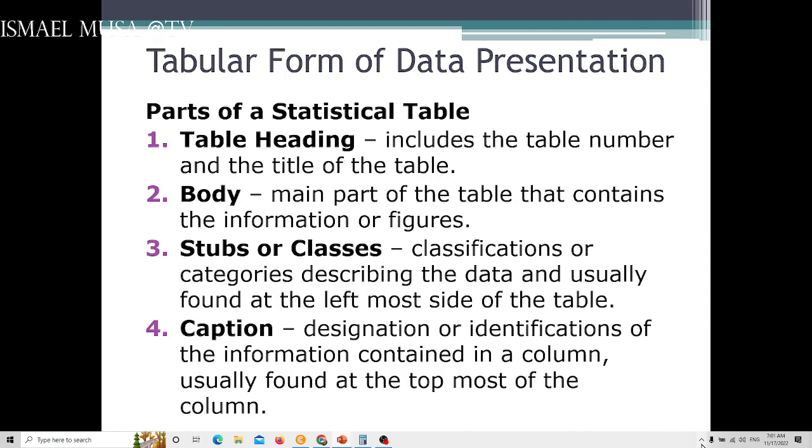Let's talk about tabular form of data presentation. In statistical tables, there must be columns and rows for a table, but you have to provide what we call table heading. In table heading, this includes the table number and the title of the table. Take note, you have to be consistent in your table number. If you use Arabic numerals 1, 2, 3, whole numbers, then it should be in series.